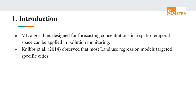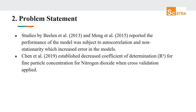Machine learning algorithms designed for forecasting concentrations of pollution in spatial-temporal space can be applied in pollution monitoring. Nibs in 2014 observed that most land use regression models targeted specific cities. Studies by Beline et al. 2013 and Ming and her group in 2015 reported that the performance of the model was subjected to autocorrelation and non-stationarity, which increased error in the models. Beline observed varying outcomes from land use models.